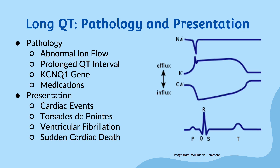In normal individuals, ion channels in the heart allow for the flow of positively charged ions such as potassium and sodium in and out of the heart cells. This flow helps regulate the heart's electrical activity and ensures a stable heart rhythm.